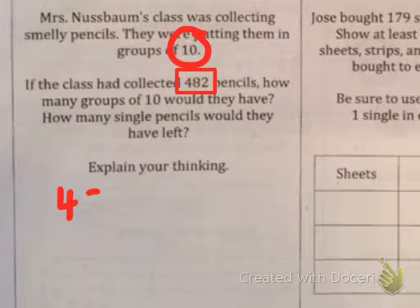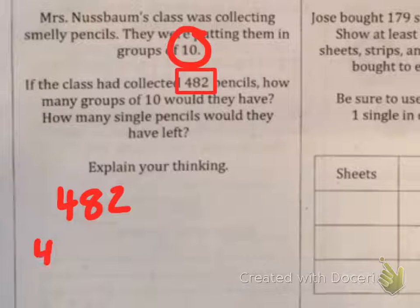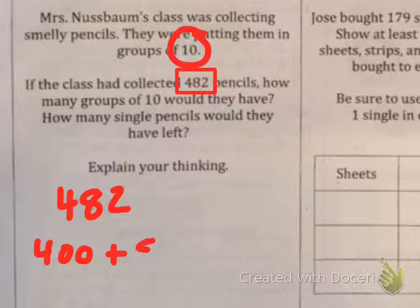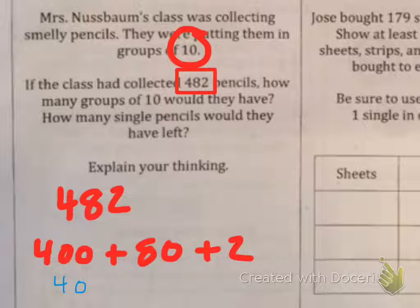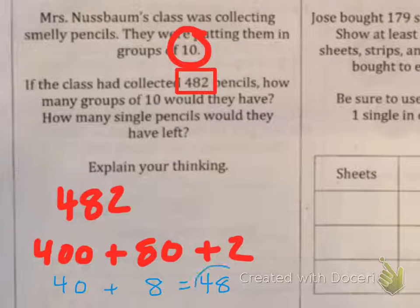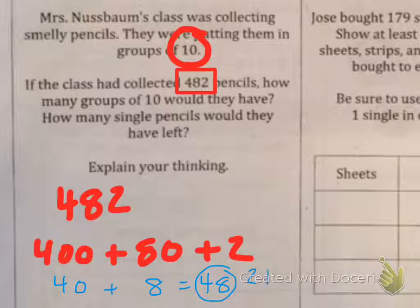I know that 482 is 400 plus 80 plus 2. So if I do that, I know that there would be 40 tens, there would be 8 tens. So 40 plus 8 equals 48. So there would be 48 tens and 2 left over.